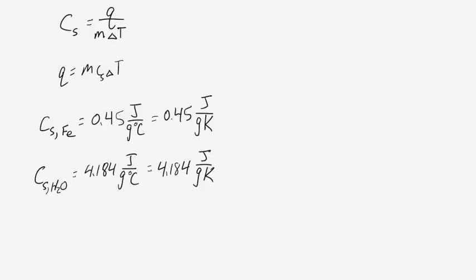The specific heat for iron (Fe) is 0.45 joules per gram degree Celsius, or 0.45 joules per gram Kelvin — they're the same value. This means it only requires 0.45 joules to raise 1 gram of iron by 1 degree. Similarly, the specific heat of water is 4.184 joules per gram degree Celsius, which means it takes about 10 times as much heat to raise 1 gram of water by 1 degree.